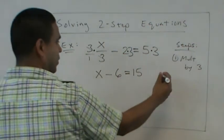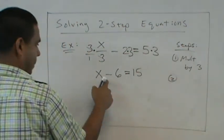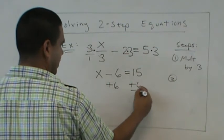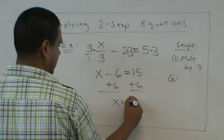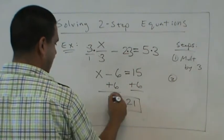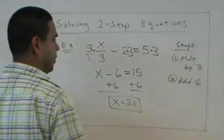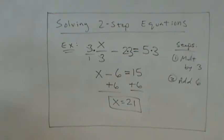What would be step 2? Inverse of subtraction. Addition. So we add 6. So x is 21. That's it. Easy. Question?